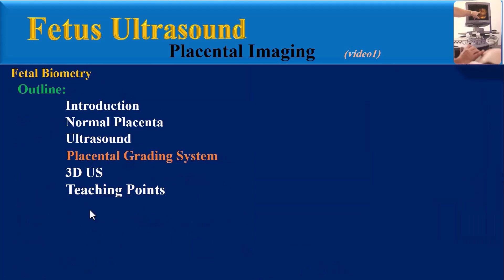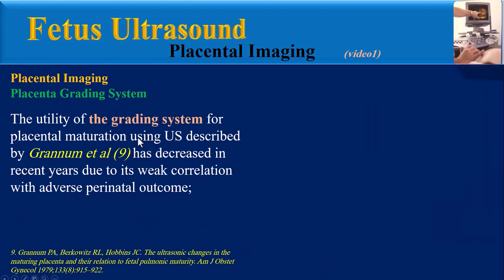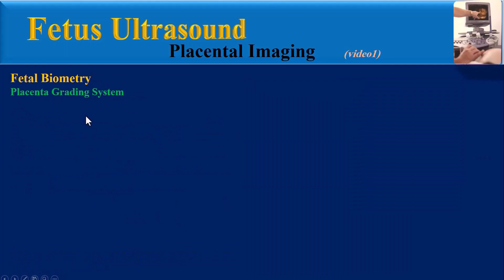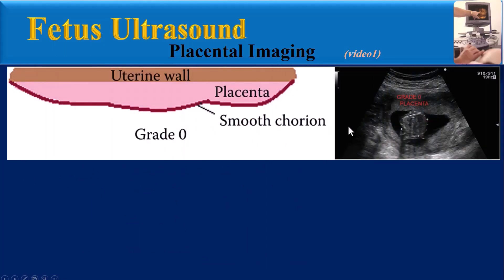Placental grading system. The utility of the grading system for placental maturation using ultrasound has decreased in recent years due to its weak correlation with adverse perinatal outcome. In grade 0, we see a homogeneous placenta with uniform echogenicity without indentation. This form of placenta is seen in the first and early second trimester, usually between 10 to 17 weeks of gestation.